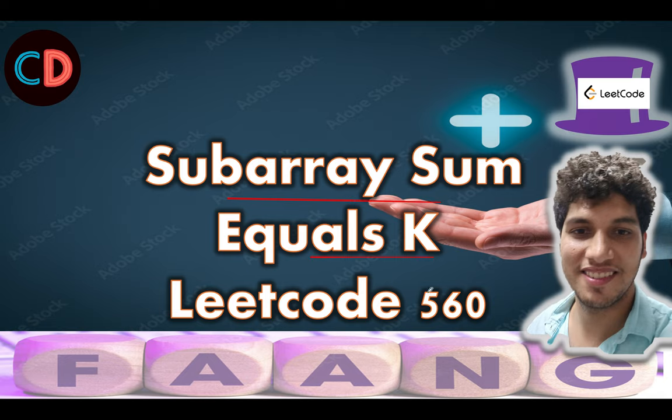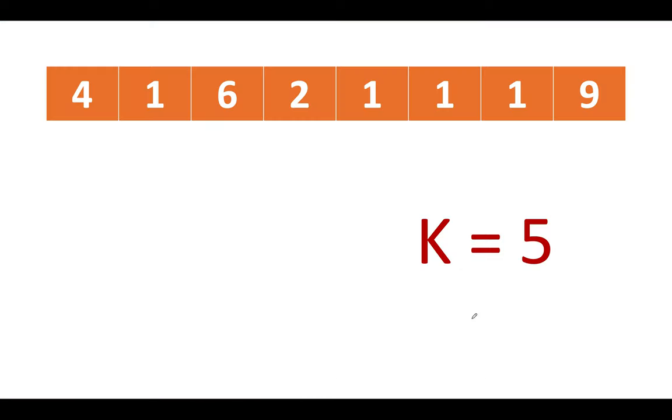Subarray sum equals k, Problem 560. Let's take a slightly longer example to what was specified in the question. We have the elements as 4, 1, 6, 2, 1, 1, 1, 9 and the value of k that is given to us is 5. The first possibility of solution is this one 4, 1 and the second possibility of the solution is these 4 elements 2 plus 1 plus 1 plus 1 that leads to a sum of 5. As a result of which we need to return 2 as the answer because we were able to identify 2 subarrays where the sum happens to be equal to 5.